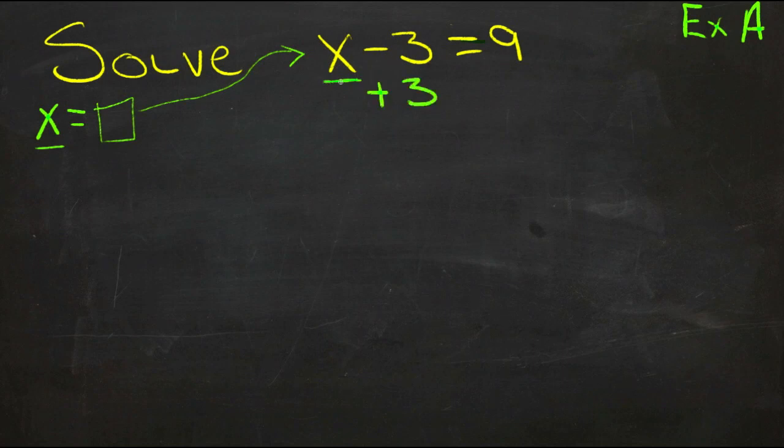So if we start with some number, and we take 3 away, and then add 3 back, effectively all we're doing is keeping that one number, and then adding or taking away 0.